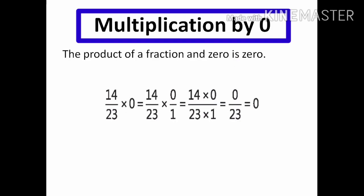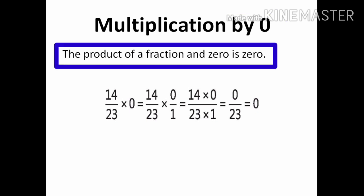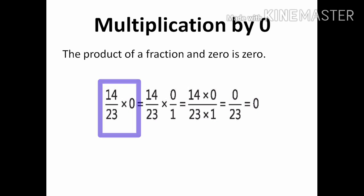Next property is multiplication by 0. The product of a fraction and 0 is 0. For example, 14 upon 23 multiplied by 0 is equal to 0.